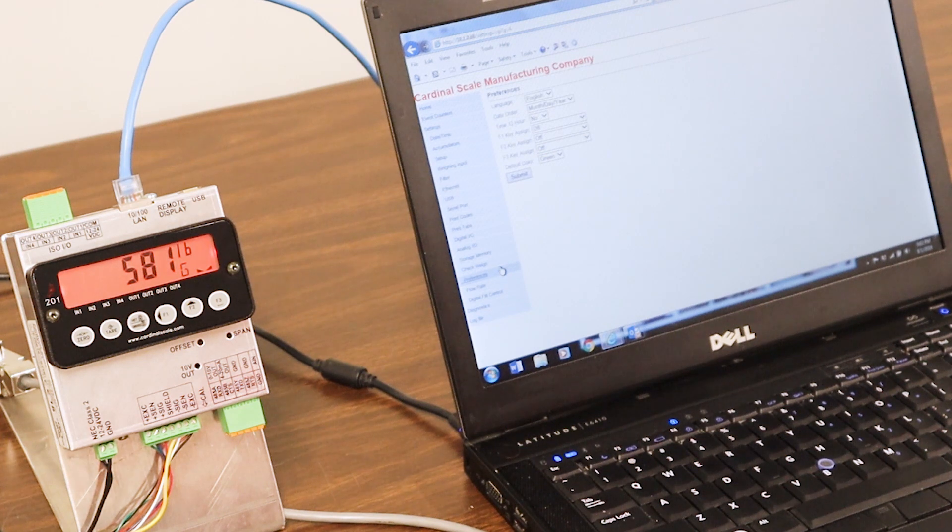On our preferences, this is where you're going to assign the keys F1, F2, and F3. These are programmable. You're also going to set your time to 12 hour or 24 hour. Month, day, year, and your language is English or Spanish.